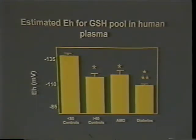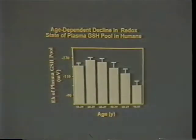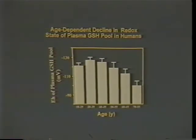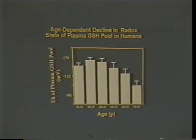We're standardizing this method and making it available for routine measurement. A recently completed study - work that Vino Modi did as a medical student - looked at individuals as a function of age, and beginning at about 45 years old there is a progressive oxidation at the rate of approximately one millivolt per year. A 30 millivolt change - the change between an average 45-year-old and an average 75-year-old - would be the equivalent of about a tenfold change in the functional activity of a thiol-dependent component.